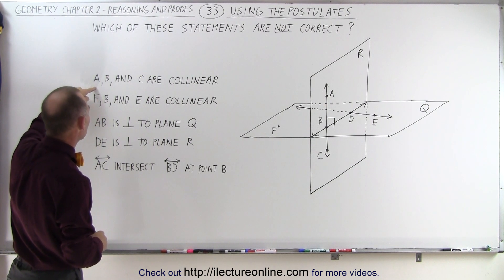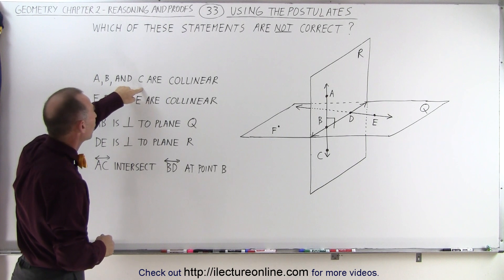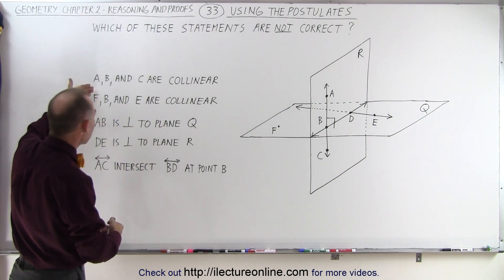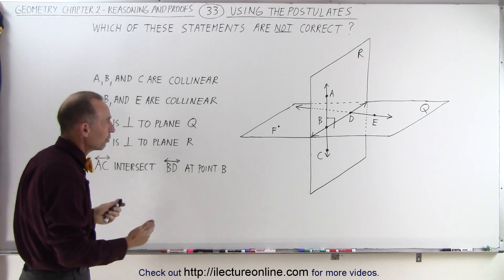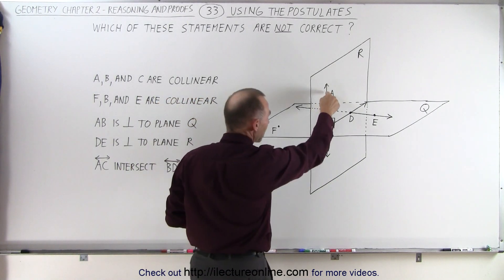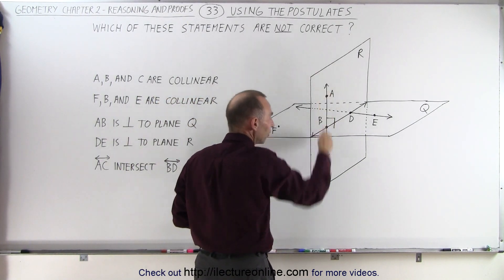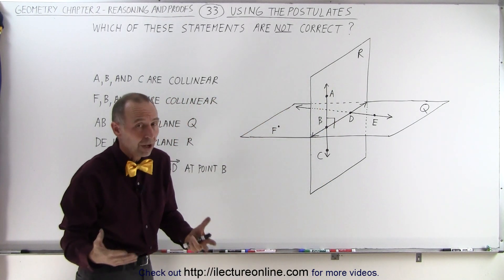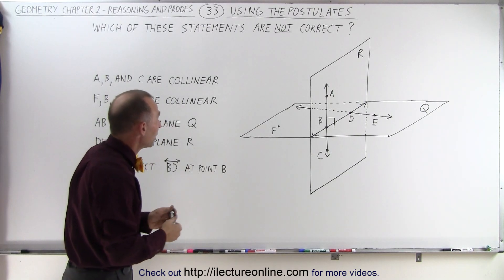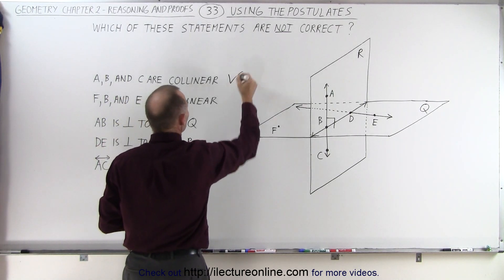First of all, they make the statement A, B, and C are collinear. Is that a true statement? You see A, B, and C are on the same line, and if three points are on the same line then they must be collinear. So yes, that is a true statement.